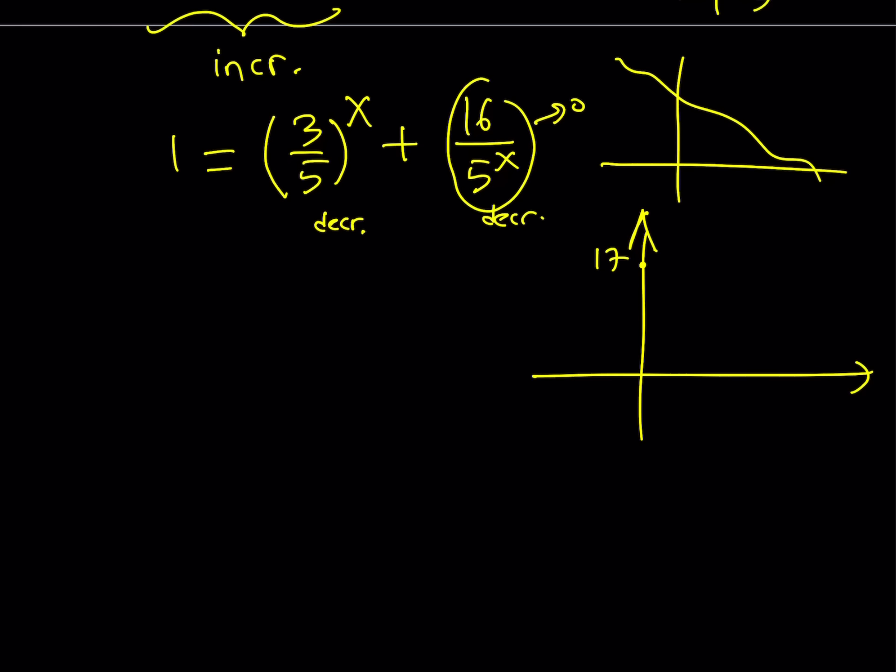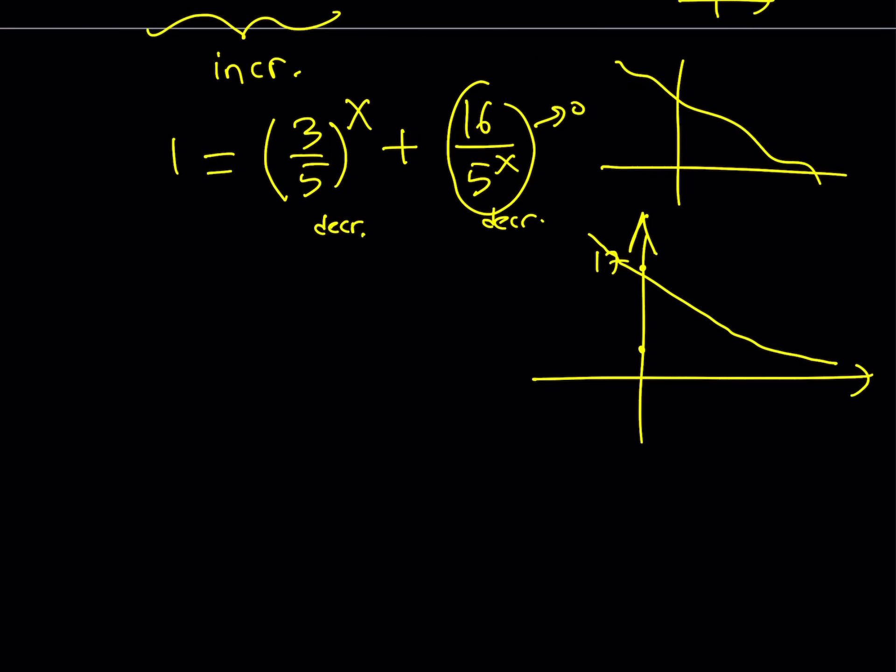As x approaches infinity, this is going to approach 0 and this is going to approach 0. So our function is going to approach 0. But since everything is going to stay positive, our function is kind of going to stay above the x-axis. The details are not that important. But we do have another function, which is horizontal, and that is y equals 1.